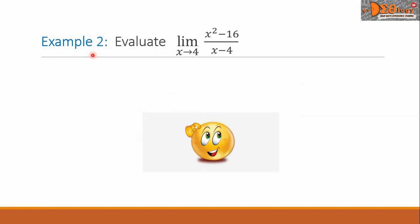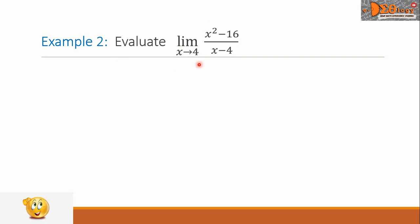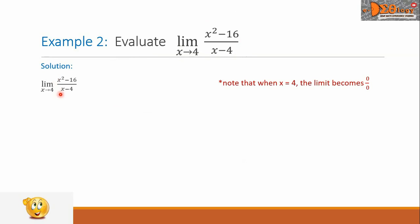Example 2: evaluate the limit of the function x squared minus 16, all over x minus 4, as x approaches 4. For our solution, let us copy this function. Note that when we substitute the value 4 to x, we will get 0 over 0, and we call this an indeterminate form.